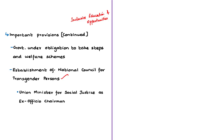Another important provision is the establishment of a National Council for Transgender Persons. The Union Minister of Social Justice and Empowerment will be the ex-officio chairperson of this council. The council will have representatives from the National Human Rights Commission, National Commission for Women, state governments, union territories, and non-governmental organizations working for the welfare of transgender communities.